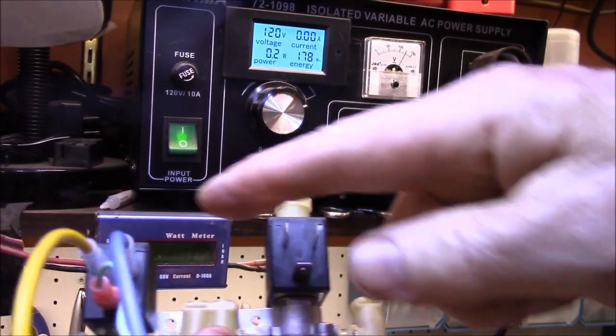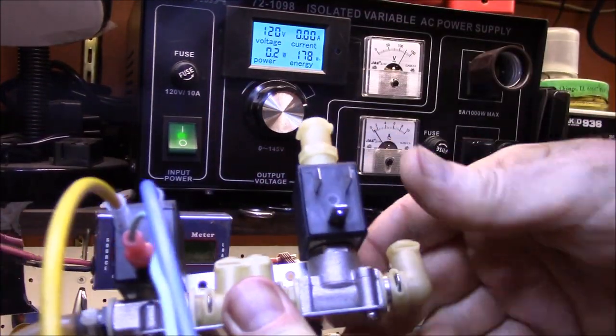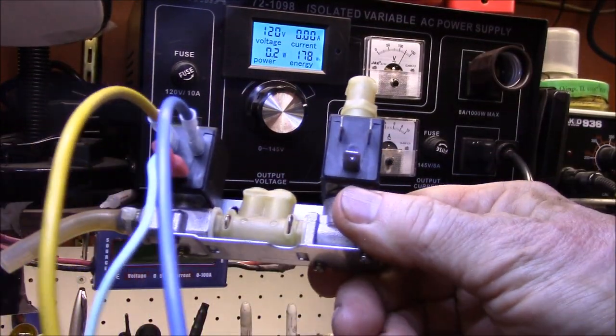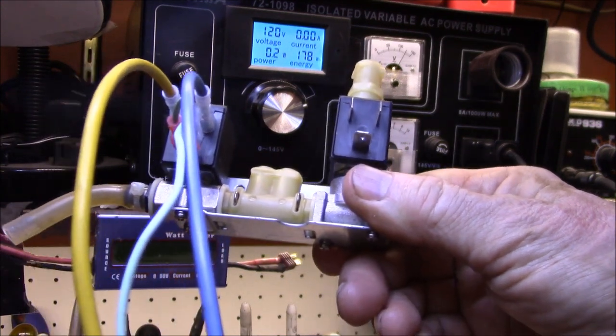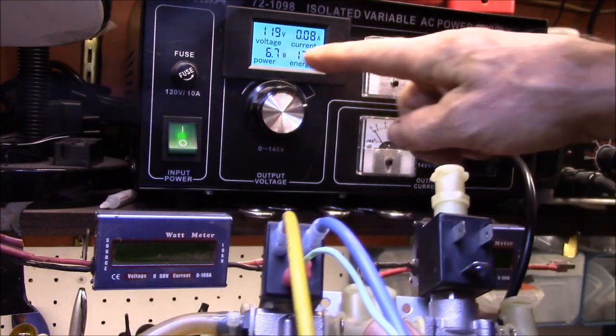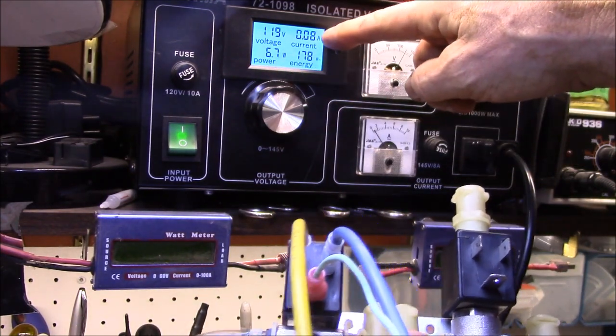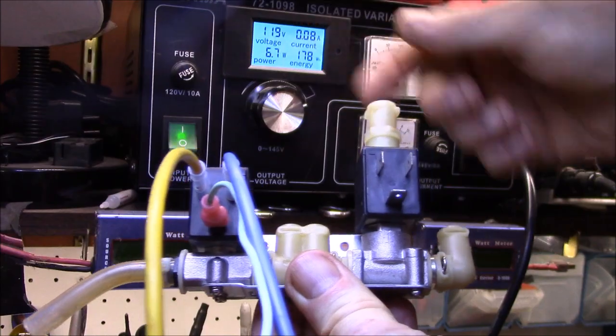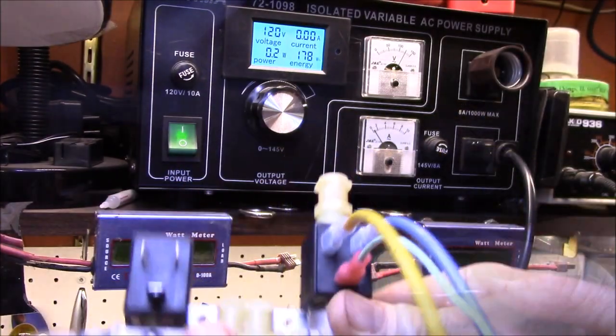So here's the old solenoid with the Olab valves. And here we go, I'll shut the quick test. There's the clicking. We get about 6.7 watts and 80 milliamps, so this one checks out.